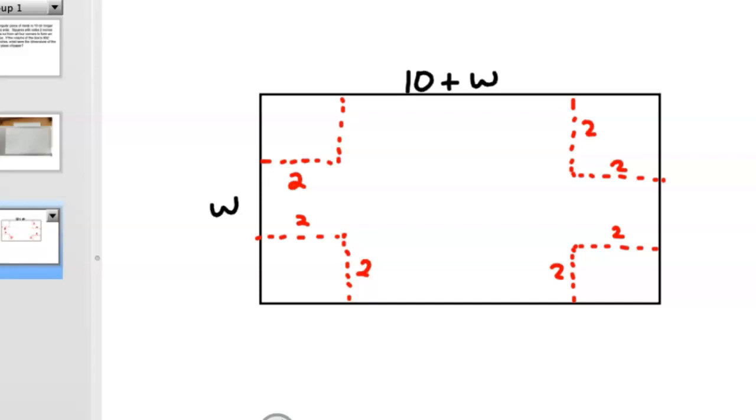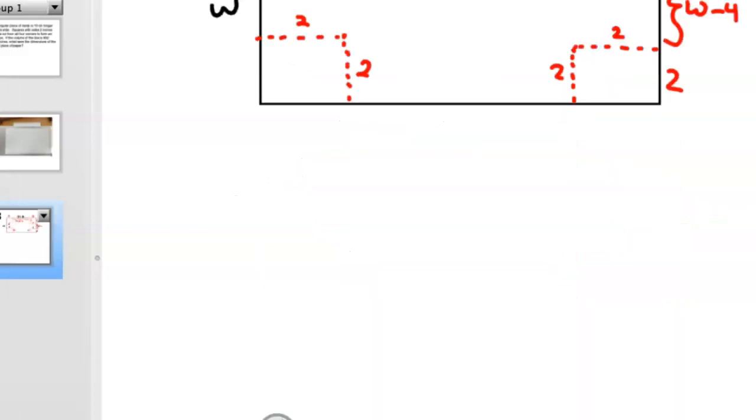So we're going to cut those out, which then leaves this length here. We're going to subtract 4. So it's 10 plus W minus the 4 centimeters, 2 here and 2 here, that we're going to cut off. And that makes the width now width minus 4, because we're going to subtract off these two, because we're going to cut them out. And that's when you end up, that's what you'll do, the first part.